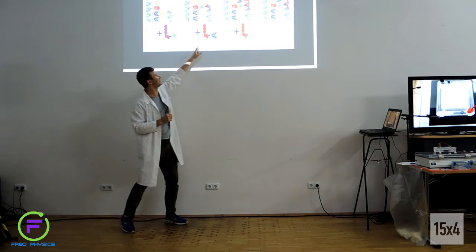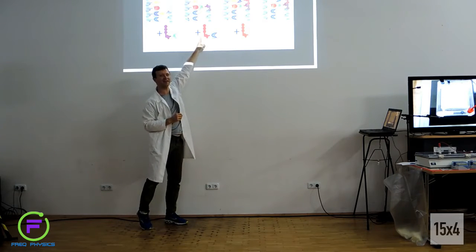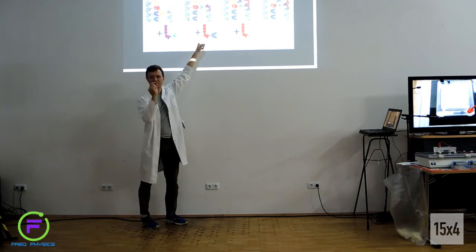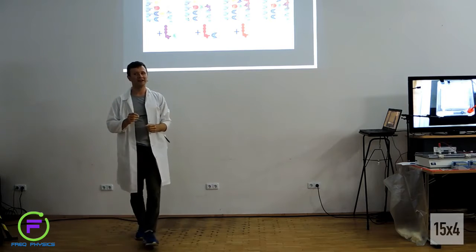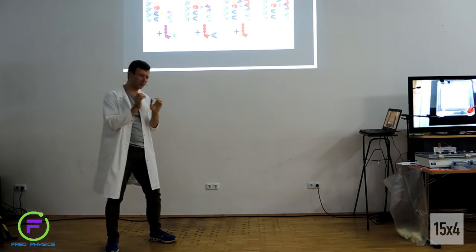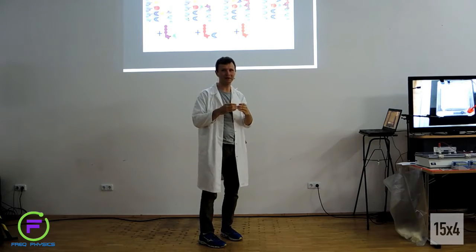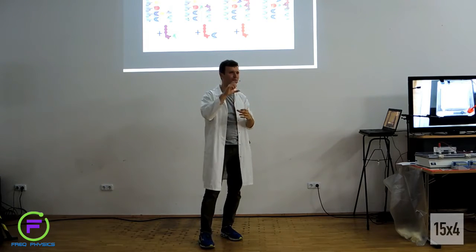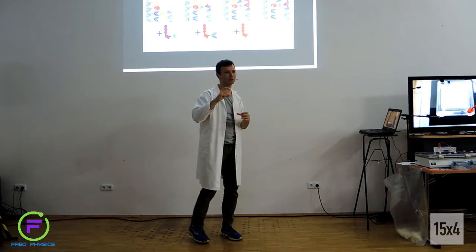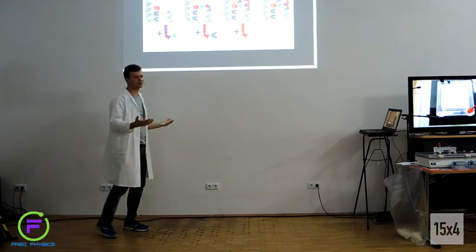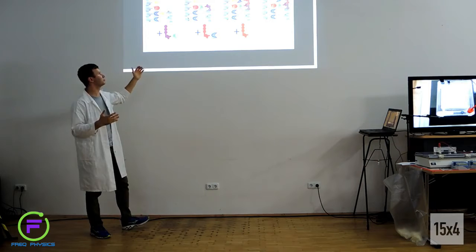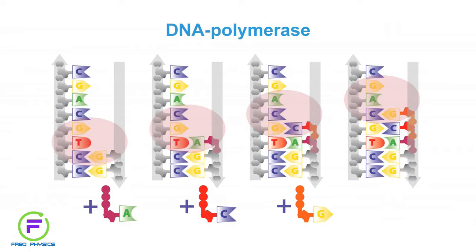The building blocks for DNA polymerase are actually clever — they have three phosphate groups attached, whereas in DNA there is just one. So the building blocks act as both structural units and energy batteries. DNA polymerase is a thermodynamic machine that needs energy to do its work, and these triphosphate building blocks provide that energy as they are incorporated.